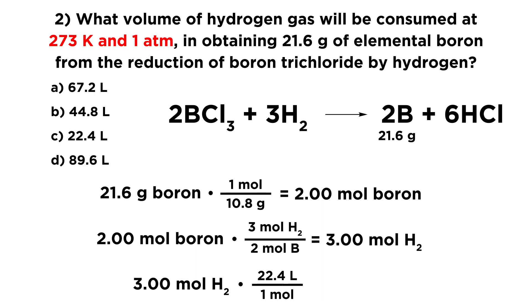273 Kelvin and 1 atmosphere is standard temperature and pressure. We did need to be able to recognize that those conditions were equivalent to standard temperature and pressure. And if we do that arithmetic, we find out that we are going to need 67.2 liters of hydrogen in order to get that desired mass of boron. So A will be our answer.